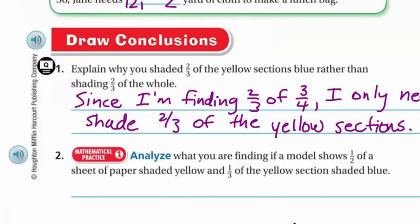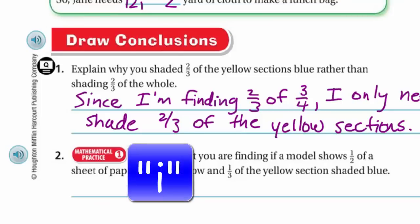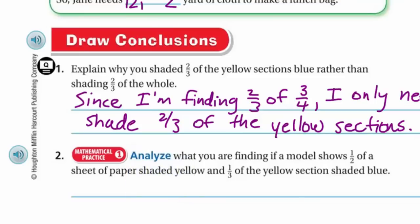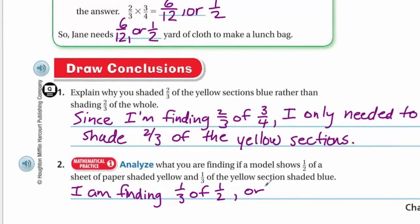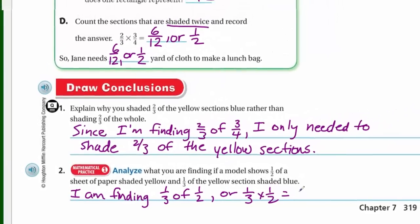Analyze what you are finding. If a model shows one-half of a sheet shaded yellow and one-third of the yellow section shaded blue, like our problem — we took two-thirds of three-quarters, meaning we found two-thirds of that yellow section. Here, we take one-third of the yellow half, shading it blue. That means we're taking one-third of one-half, or one-third times one-half, which equals one-sixth.